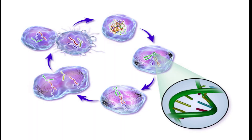Introduction. Cancer is a complex and diverse group of diseases characterized by the uncontrolled growth and spread of abnormal cells in the body. It's important to understand that there isn't just one type of cancer, but rather numerous types that can affect different organs and systems within the body.